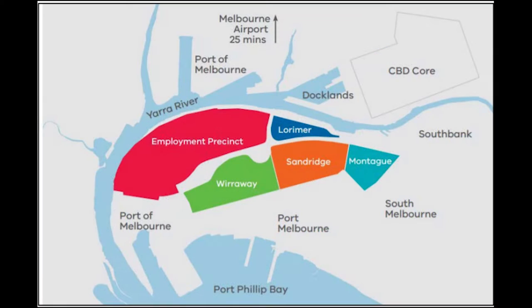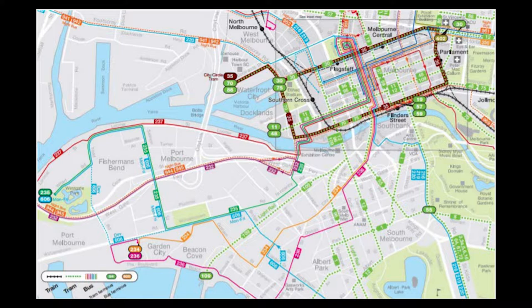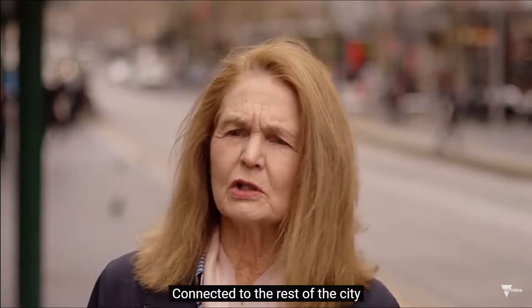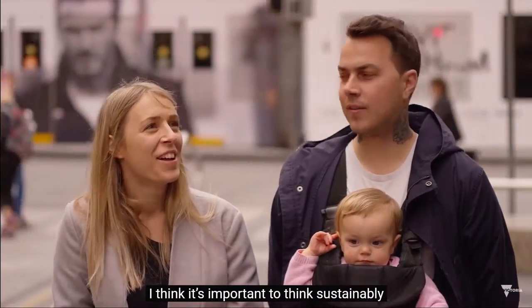Firstly, just a quick overview of Fisherman's Bend's background. Fisherman's Bend consists of five parts and plays a very important role in the flight lines. Today we have train, tram, and bus lines. After interviewing hundreds of people, the government decided to improve the transport network of Fisherman's Bend.